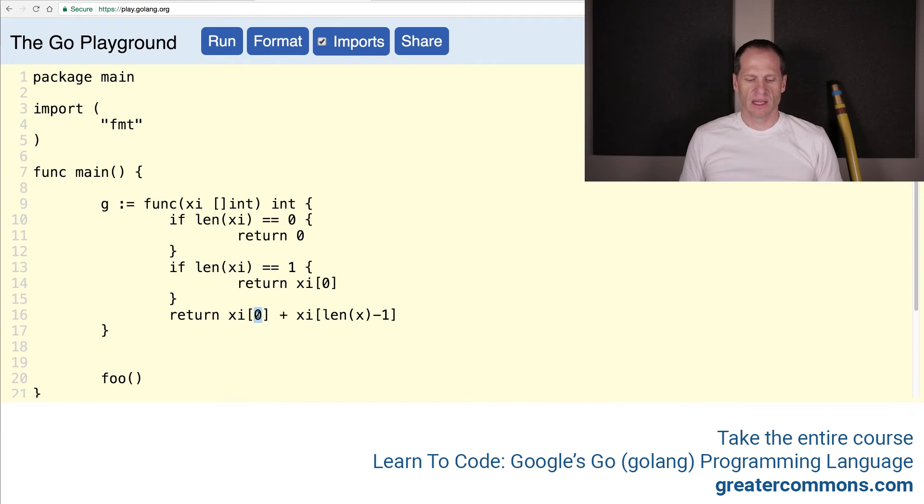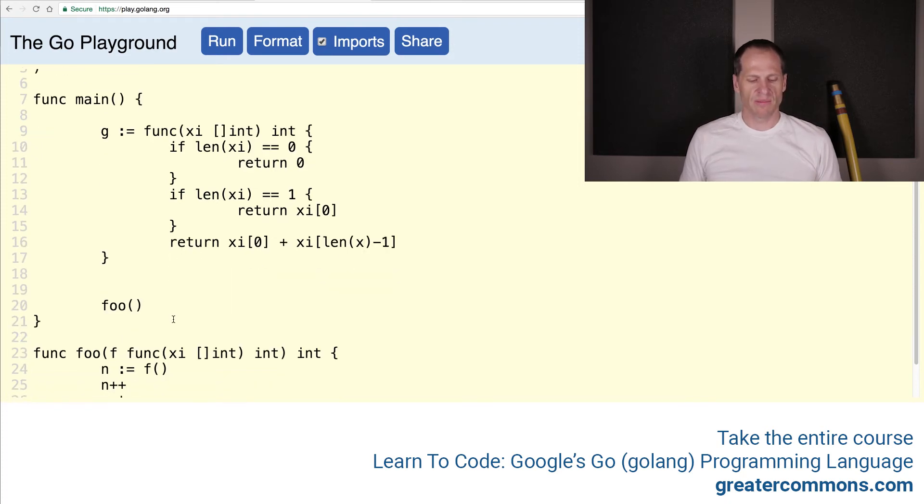So we'll take the first item and the last item and add them together. If there's no items, it returns zero. If there's just one item, it returns that first item. Otherwise, if it had two items, it would be two minus one. That gives us position one and position zero, or if it's ten items, whatever. So that's kind of cool. It returns the addition of the first and last item. And then we're going to pass this into here.